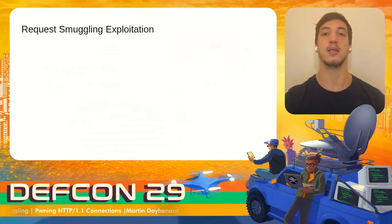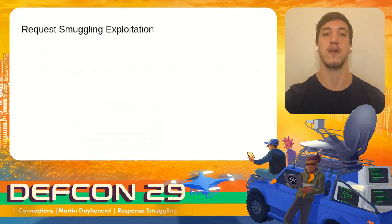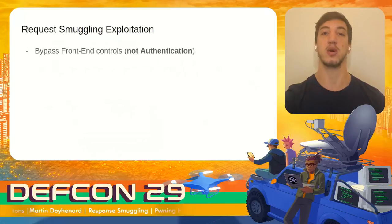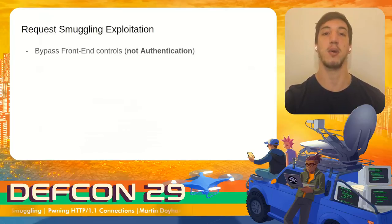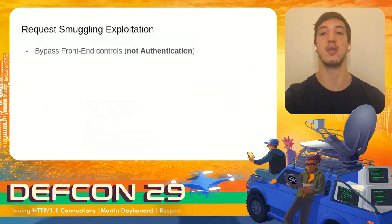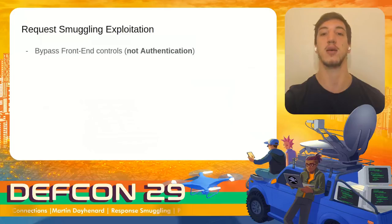Now let's see how these desynchronization vulnerabilities can be leveraged to produce useful exploits in web applications. First, we could use request smuggling to bypass front-end controls such as filters to forbidden endpoints — this is done by smuggling the forbidden request, which will not be seen by the proxy and will be forwarded to the backend. However, this technique does not bypass authentication for most resources, and in most real applications it will fail if the response is not received by the attacker or if the filter is not placed in the vulnerable proxy.